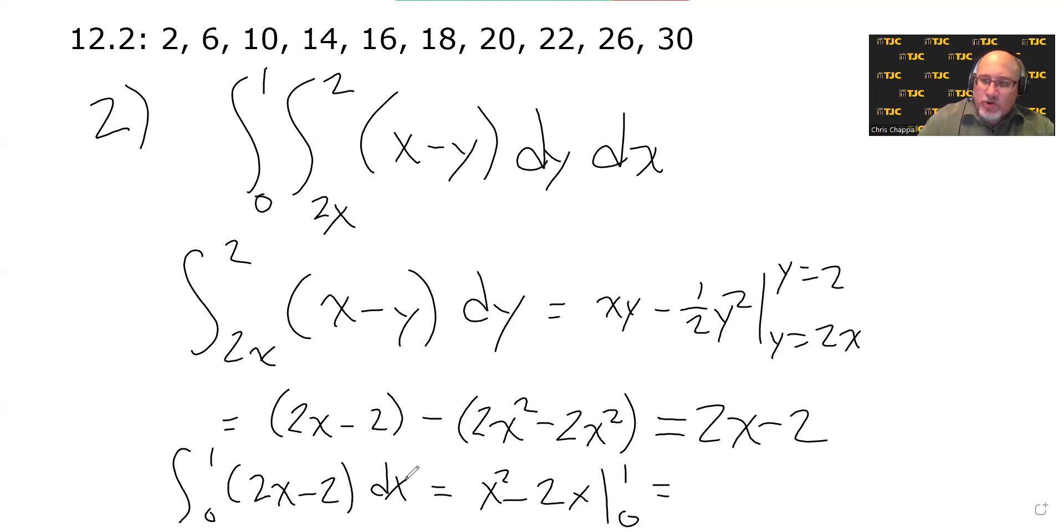When we substitute 1, we get 1 squared is 1 minus 2 times 1 is 2. And then when we substitute 0, we just get 0 minus 0. So it looks like this equals negative 1.